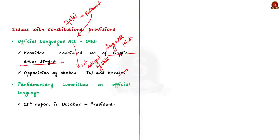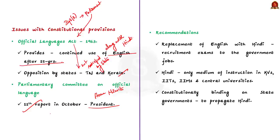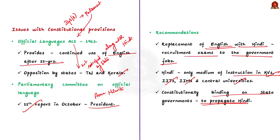Recently in October, the Parliamentary Committee on Official Language, headed by the Home Minister, submitted its 11th report to the President. The report is not yet available in the public domain, but the Home Minister highlighted some recommendations: Hindi should replace English as the official language for government recruitment examinations; Hindi should be the only medium of instruction in Kendriya Vidyalayas, IITs, IIMs and Central Universities; and it should be constitutionally binding on state governments to propagate Hindi. Some states did not agree with these recommendations, creating another controversy.